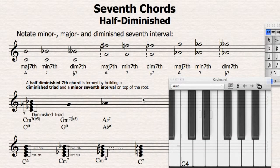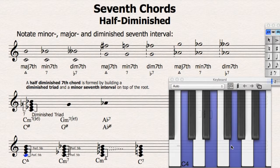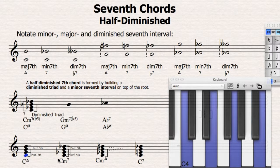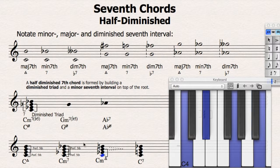Hello everyone, today I'm going to introduce you to the half diminished chord. So far we have met two chords based on a major triad: the major seventh chord and the dominant seventh chord. The only difference between them was the seventh on top of the root note. We also met the minor seventh chord and the minor major seventh chord, both based on a minor triad — again, the difference is the seventh on top of the root note.